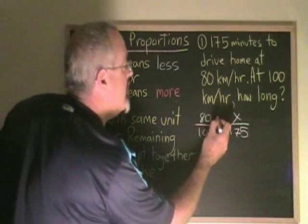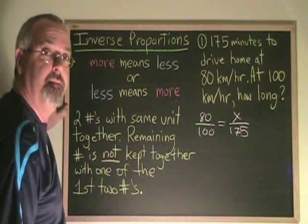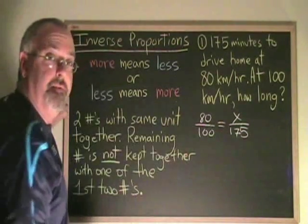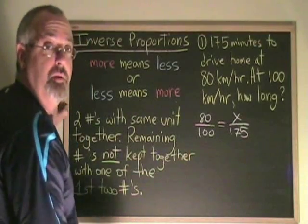If I cross multiply, I'm going to get an answer that makes sense. Now, using the fundamental rule of proportions, I do top times bottom equals bottom times top.